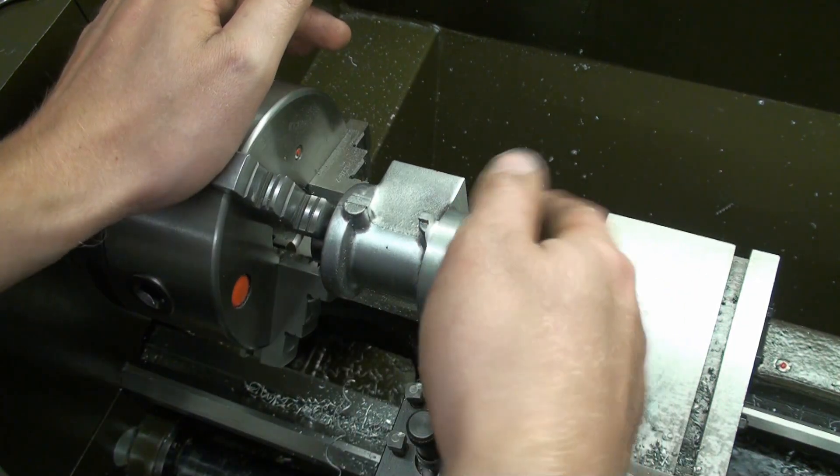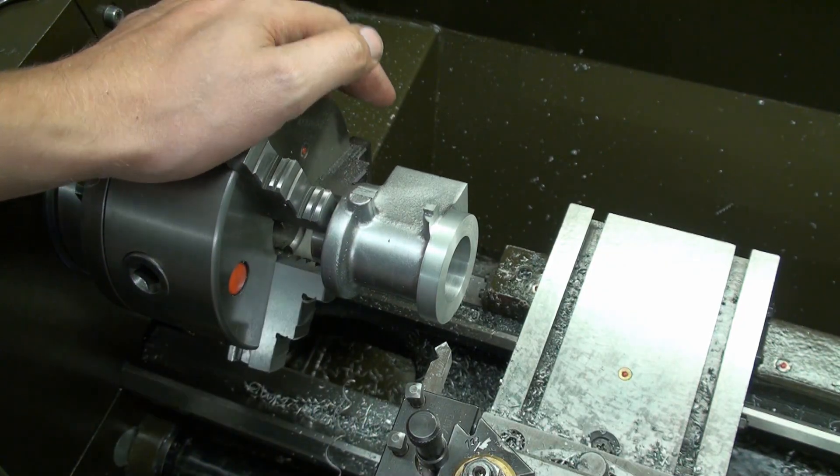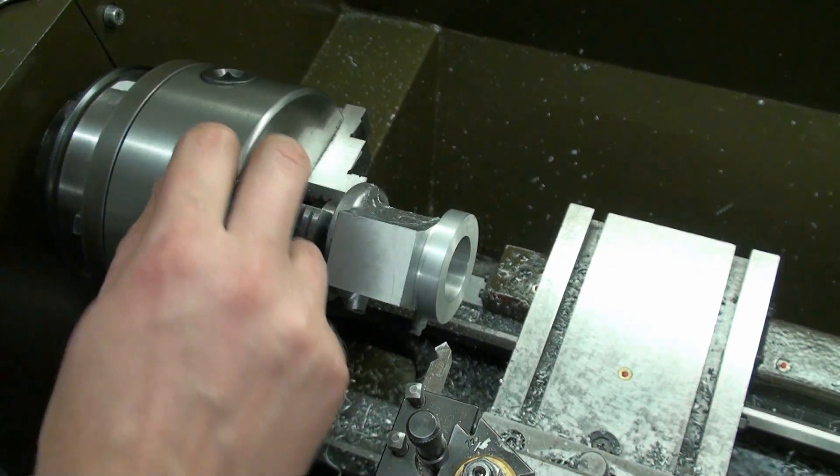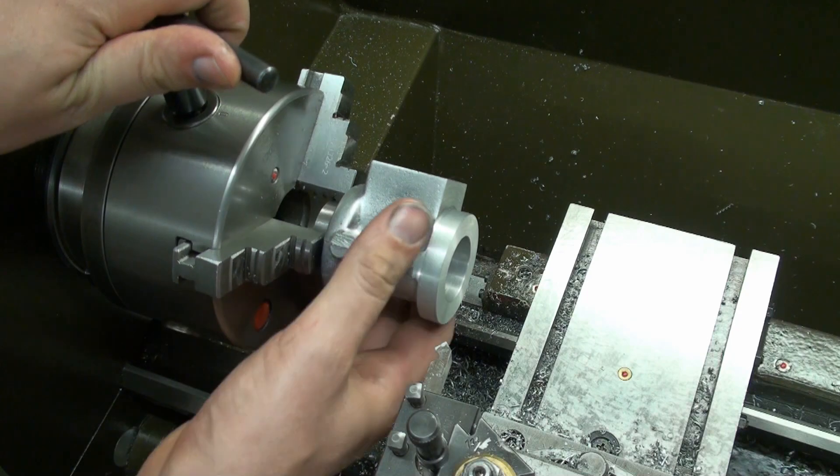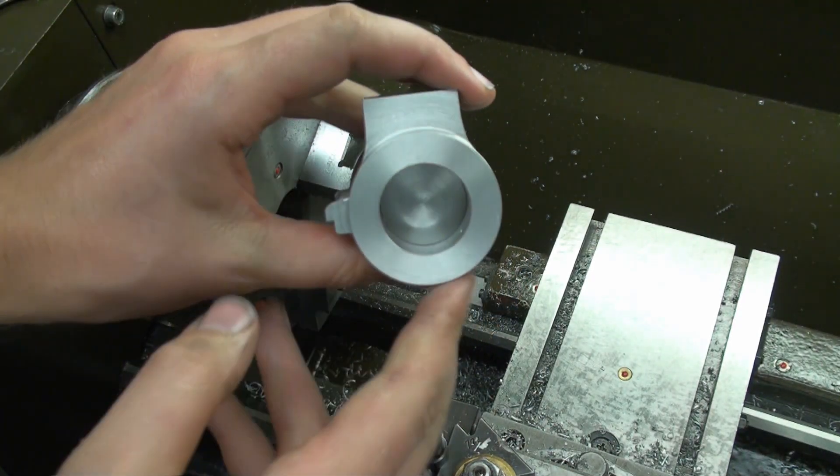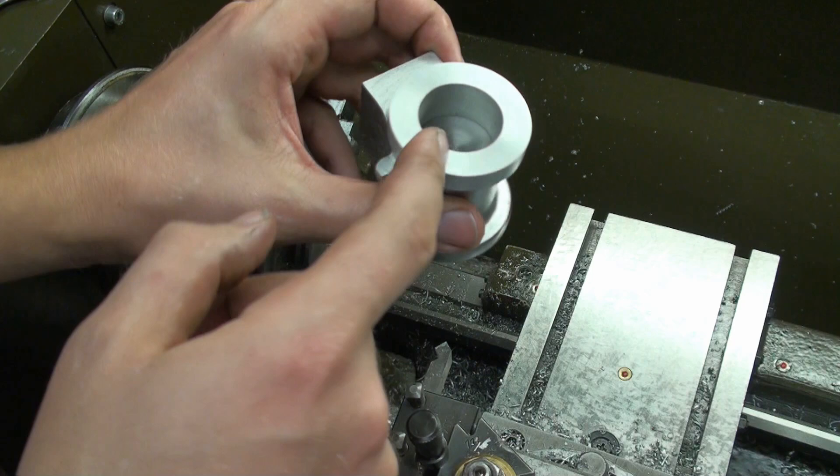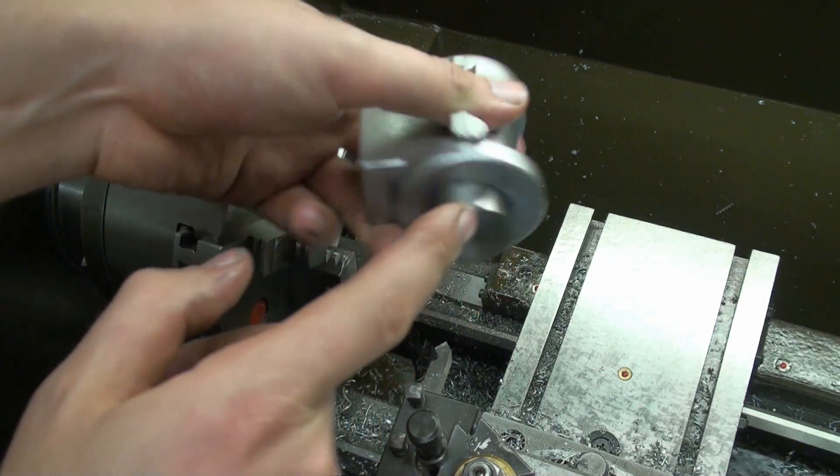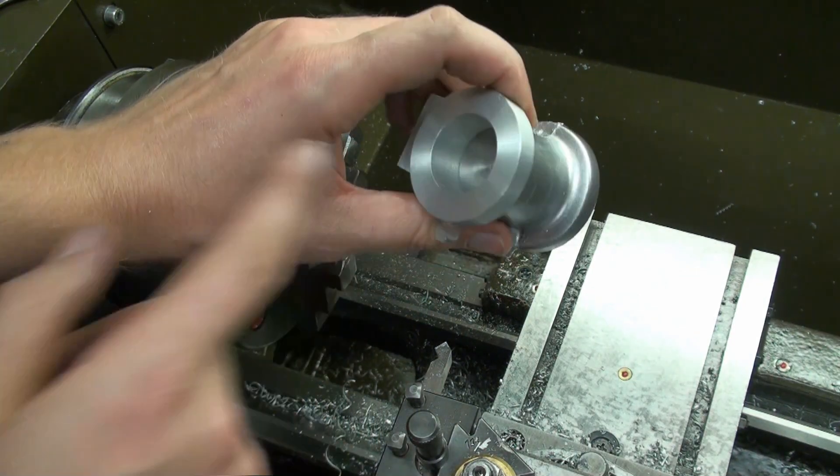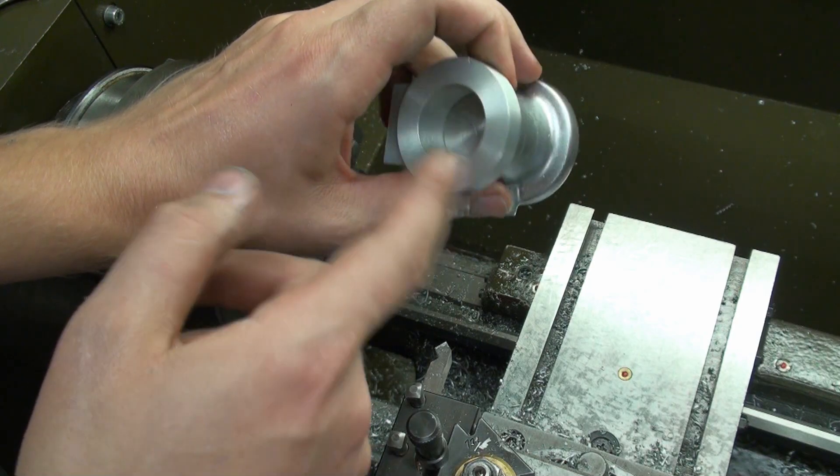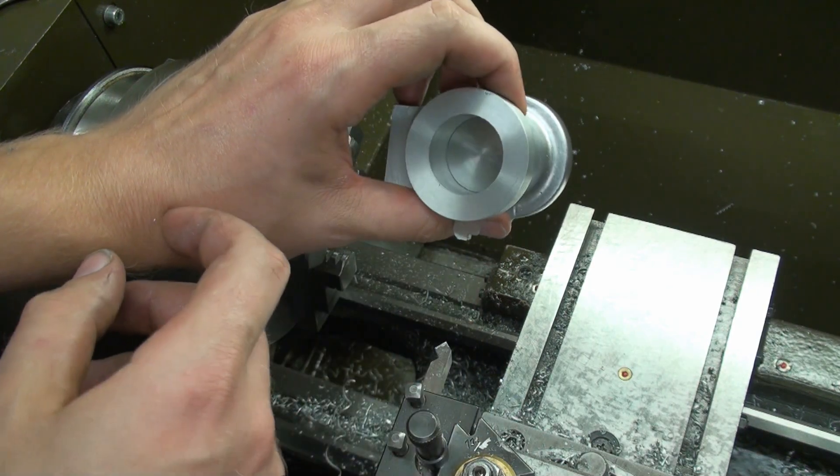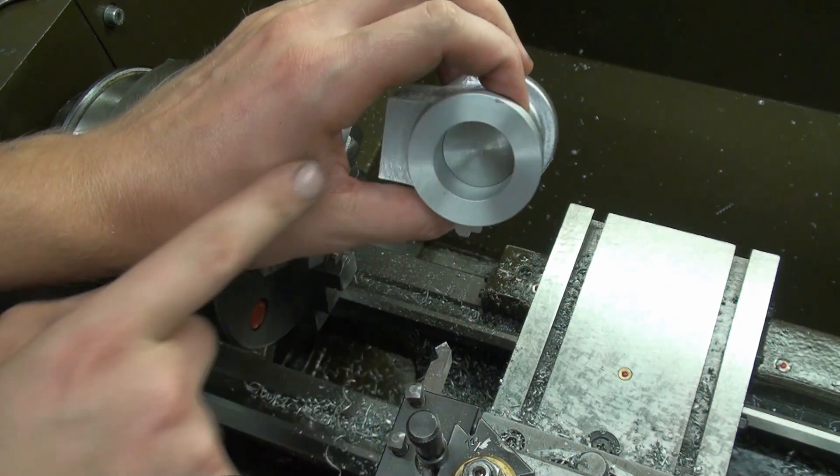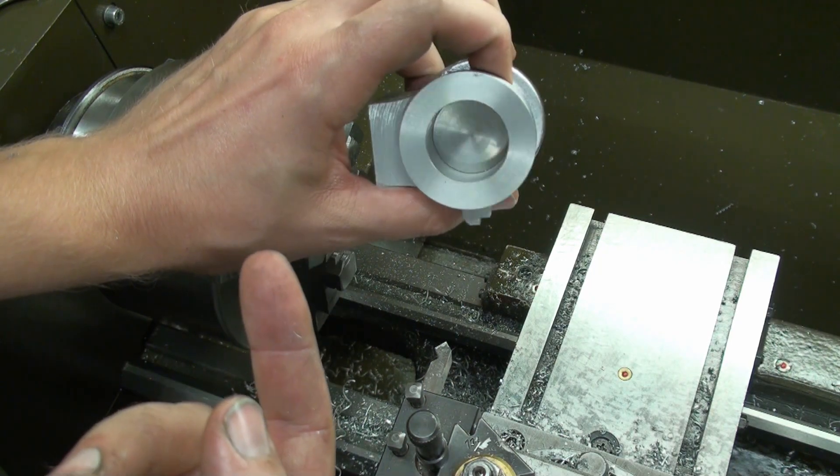But the machining with the glued on piece went very well. Now I can take it out of the chuck and get back to the bench and release this plug. We will heat it up until the Loctite loses its strength and hopefully it should fall out with some percussive help.